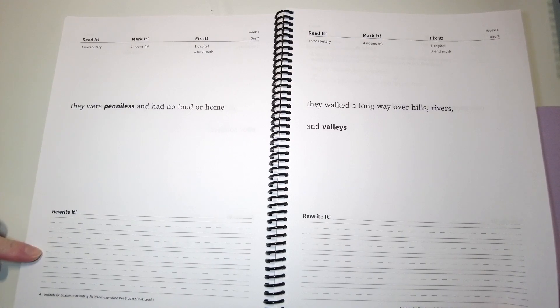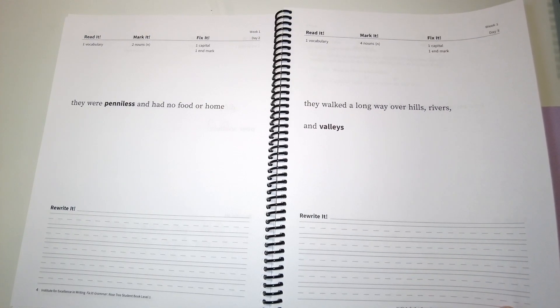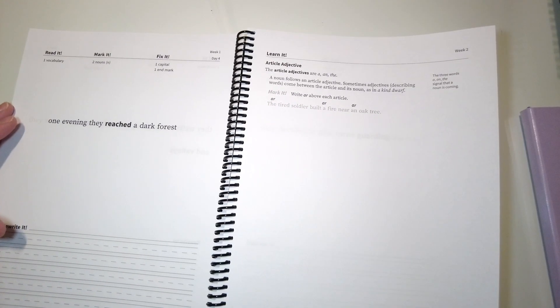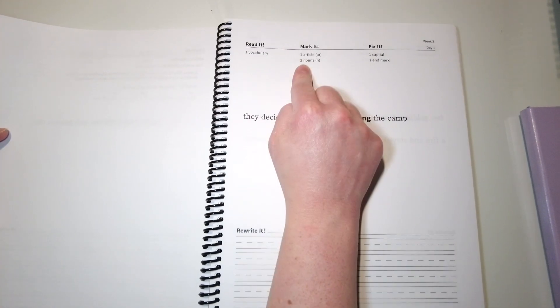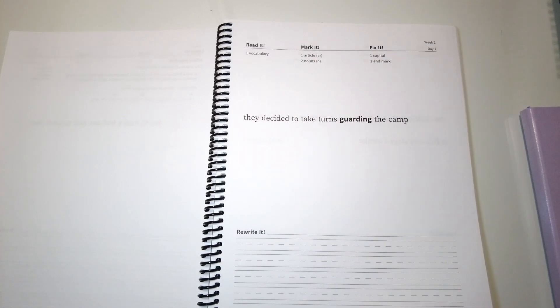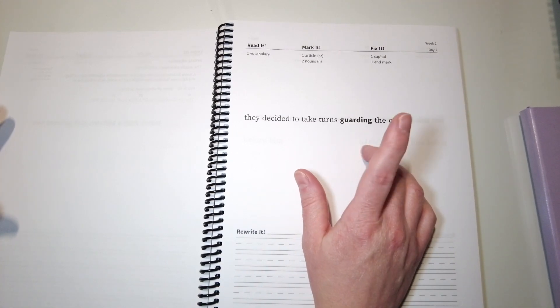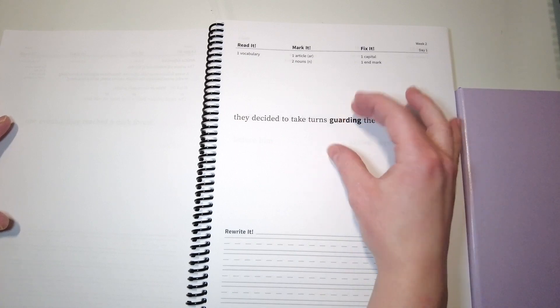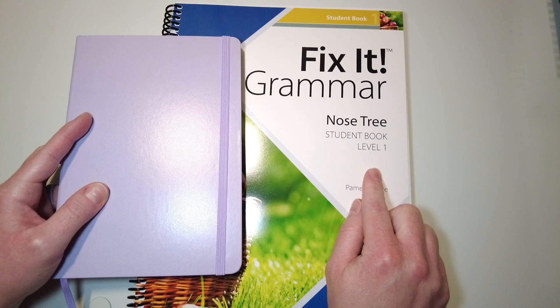So it's the same setup every day. This is just finding nouns and fixing one capital and one end mark. And then you can see week two, we're starting with article adjectives, A, an, and the. And then for week two, it builds, and you're doing nouns and articles and capital and end mark, and then of course the vocabulary word as well. But I love that because she's getting grammar practice, vocabulary, looking in the dictionary and writing that down, as well as copywork, practicing rewriting the sentence correctly. So Fix It Grammar, I love, and I know we just started, but I love it. I did get the teacher guide as well.